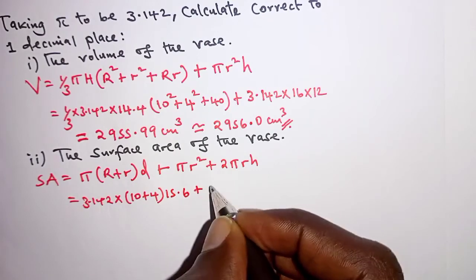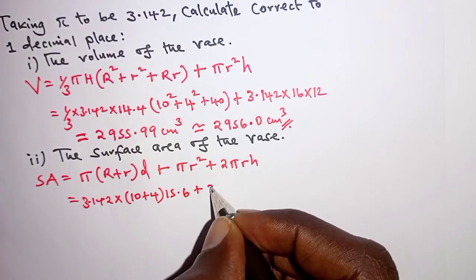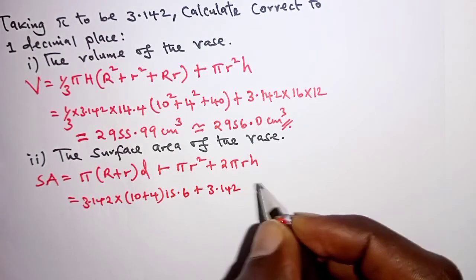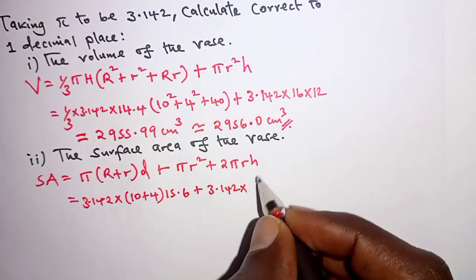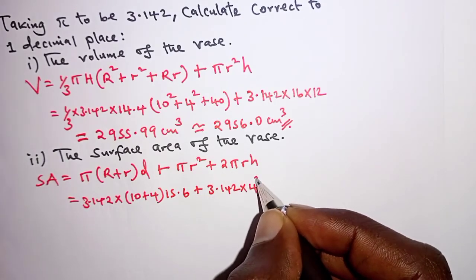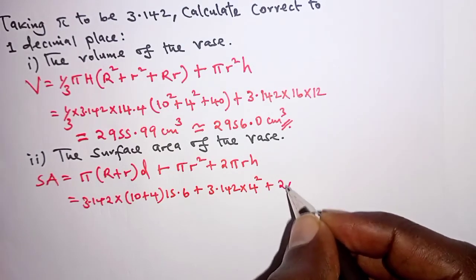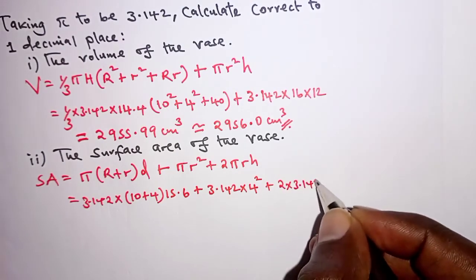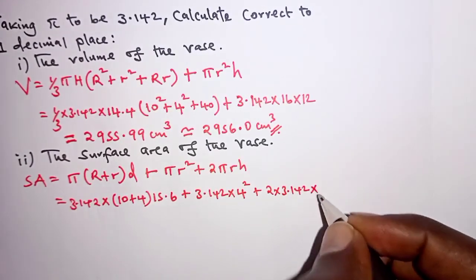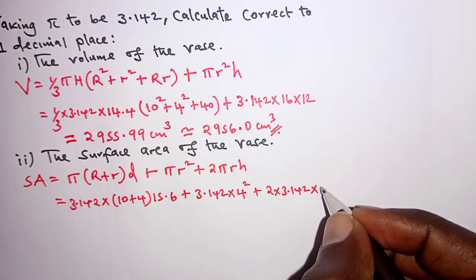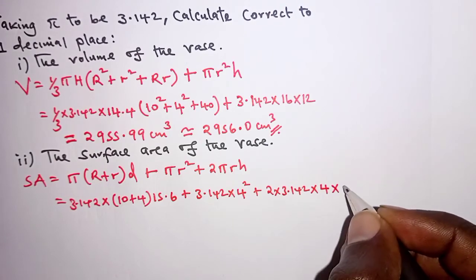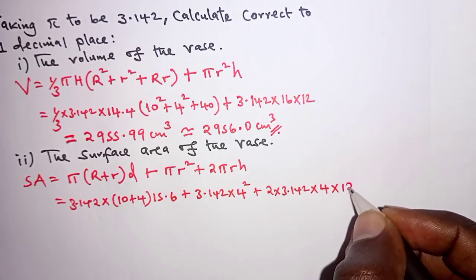so that is 15.6, and then we'll have to add that to the other part, 3.142 times r squared, which is 16, plus 2 times 3.142 times the radius of the cylinder, which is 4, times the height of the cylinder, that is 12.